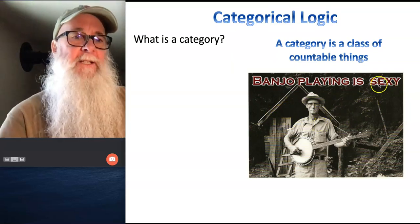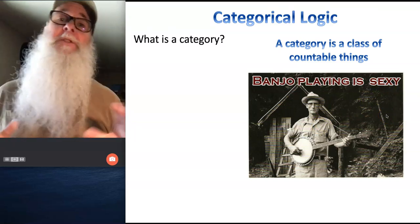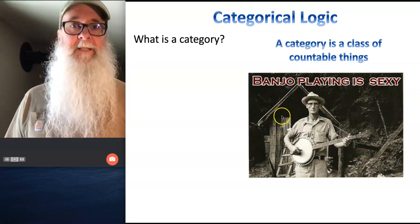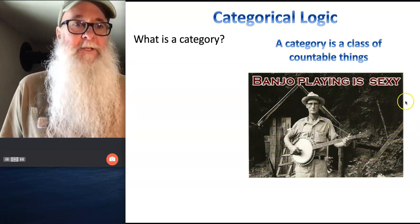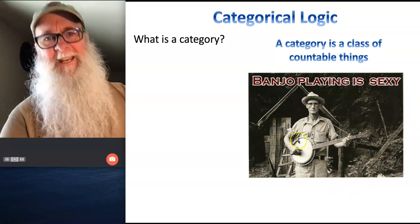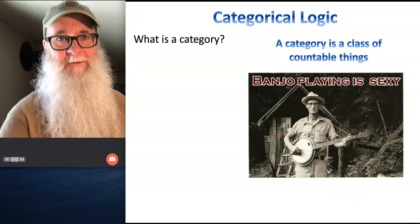But I can turn those things into countable nouns or noun phrases. I can say like, oh, this is a brown building. Okay, we can count brown buildings. There's exactly one of them in this image. We can count sexy men. There's exactly one of them who's terribly sexy in this image right here. He's terribly sexy because he's holding a banjo, of course.